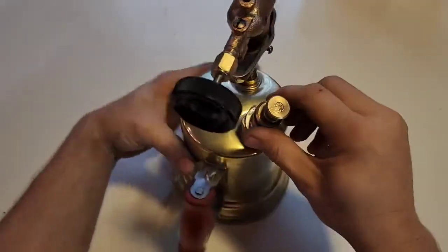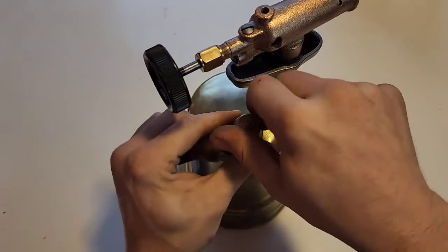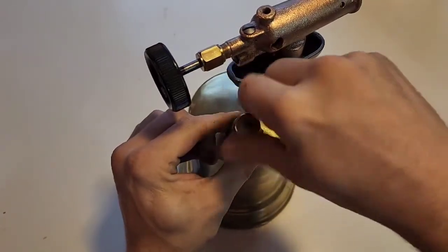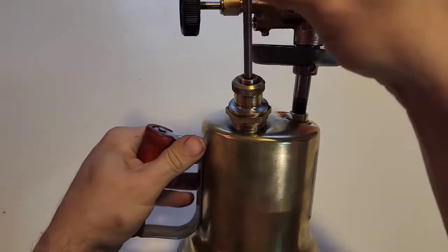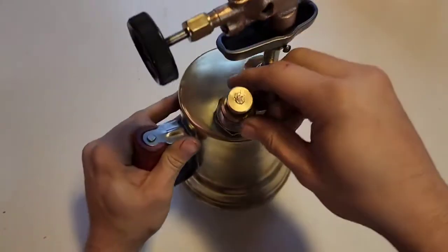While that's burning, you loosen up your locking screw here on your pumper. And once that's loosened, you have a piston that can come out. And there is a seal on the bottom of that.